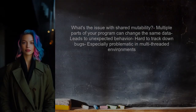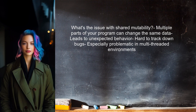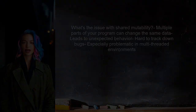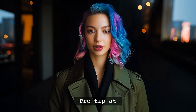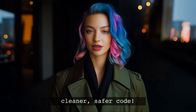So what's the issue with shared mutability? When multiple parts of your program can change the same data, it can lead to unexpected behavior and bugs that are hard to track down. This is especially true in multi-threaded environments. At the end of this video, I'll share a pro tip that can help you write cleaner, safer code.